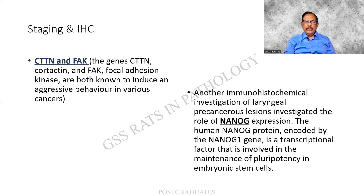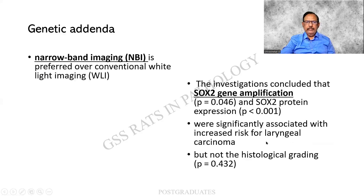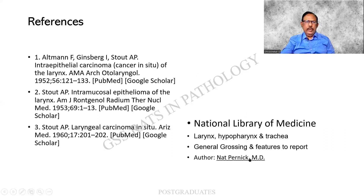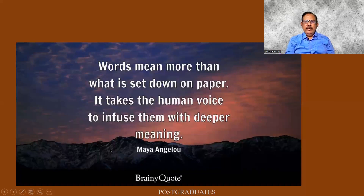After staging, there is immunohistochemistry and genetic study. The CT, TN, and FACT genes are supposed to induce aggressive behavior of the tumor. Similarly, NANOG expression — the human NANOG protein is associated with pluripotency and aggression of the tumor. Other things such as narrowband imaging and SOX2 gene amplification are useful in deciding tumor aggression, which may not be decided by histological grading alone. Thank you for your patient listening.